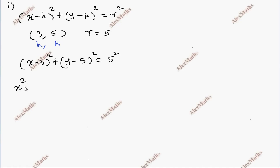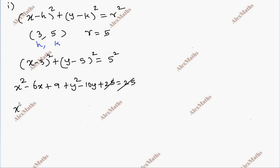Expanding: x squared minus 6x plus 9, plus y squared minus 10y plus 25, equal to 25. So 25 is cancelled. We are left with x squared, y squared, x term, y term, and constant term equal to 0.